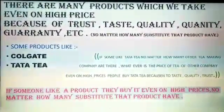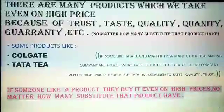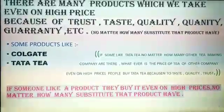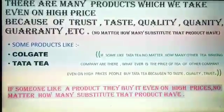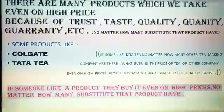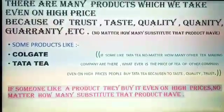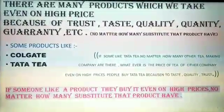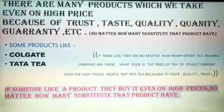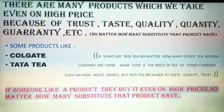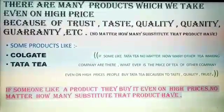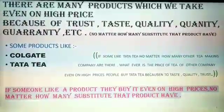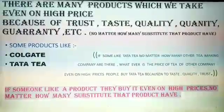For example, Colgate and Tata Tea. If someone likes Tata Tea, no matter how many other tea-making companies there are, whatever the price of tea from another company, people buy Tata Tea even at high prices because of taste, trust, and quality. If someone likes a product, they buy it even at high prices, no matter how many substitutes that product has. No matter how many substitutes, no matter the cost, no matter the price.